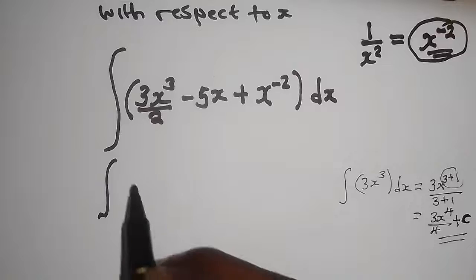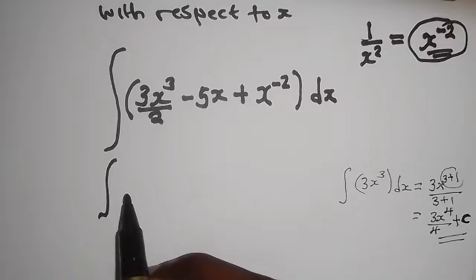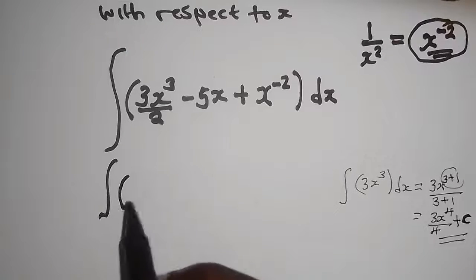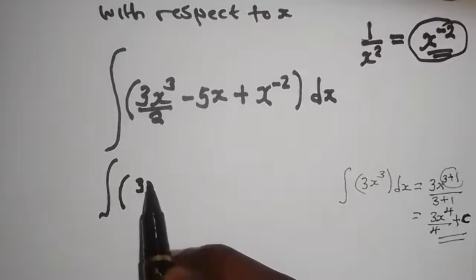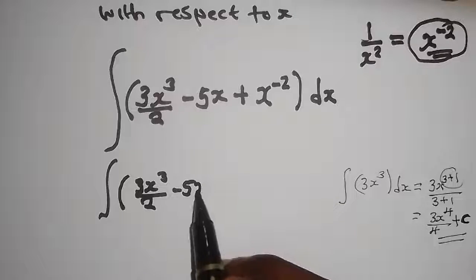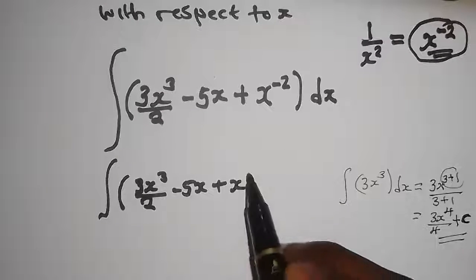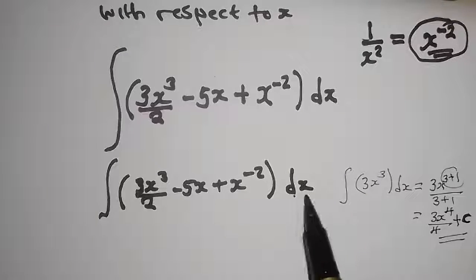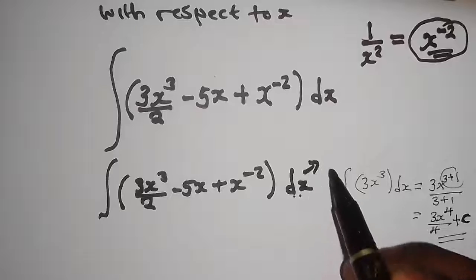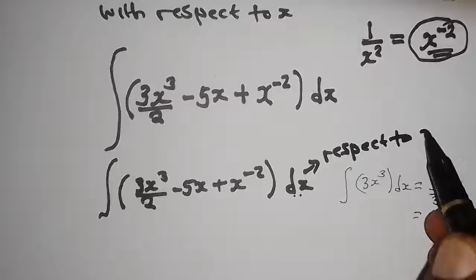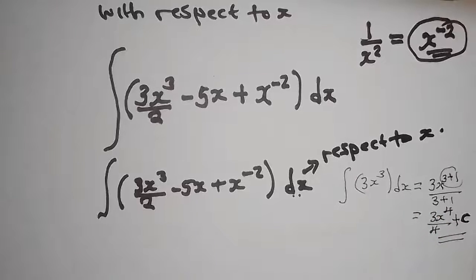Let me rewrite the full expression. We have the integral of 3x to the power 3 divided by 2, minus 5x, plus x to the power negative 2, with respect to x — dx.